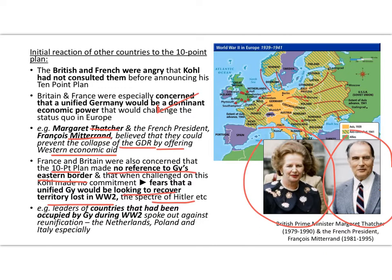They were asking whether Kohl was looking to recover territory taken away from Germany at the end of World War II. On the back of that, other countries like Holland, Poland, and Italy that had been occupied by Germany during World War II also started raising objections, coming in behind Britain and France.